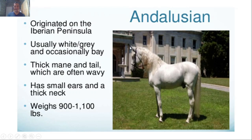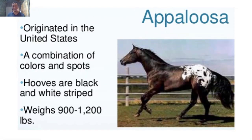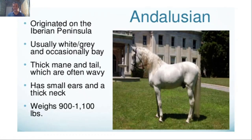The Andalusian has small ears and a thick neck, and weighs around 900 to 1,100 pounds. Next, we have the Appaloosa from the United States, known for its combination of colors and spots. Their hooves — the equivalent of our heel — have a black and white stripe. Their weight is similar, around 900 to 1,200 pounds.